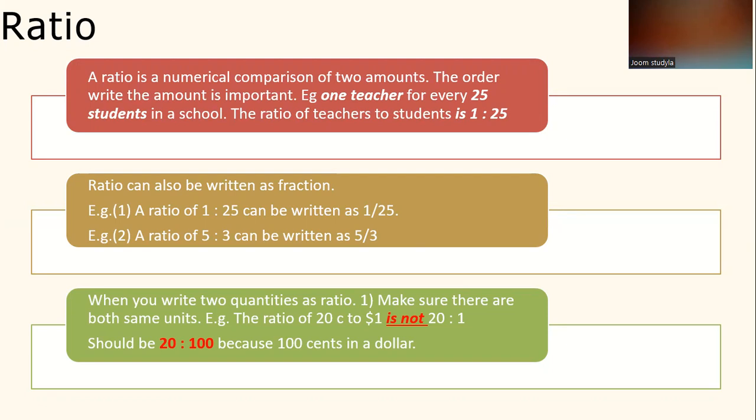Ratio can also be written as a fraction. Example, a ratio of 1 to 25 can be written as 1 over 25. Example two, a ratio of 5 to 3 can be written as 5 over 3.